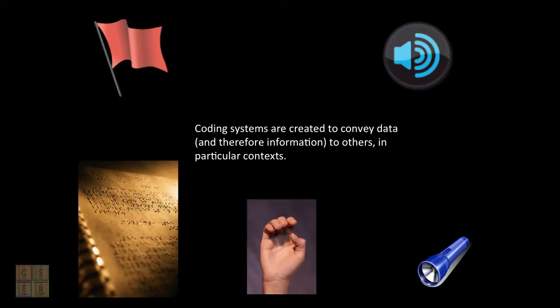There are different types of coding systems that are used to transmit messages. Let's have a look at some of these examples. Braille, sign language, flag signals such as those used at airports or semaphore systems. These systems have been created for particular purposes and work with certain limiting factors or existing factors.